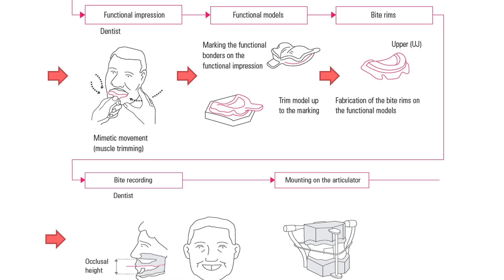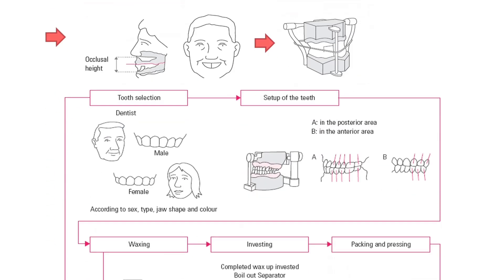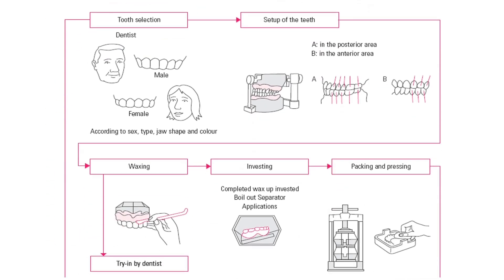This is how jaw relation is performed, and this jaw relation needs to be mounted in the articulator. Once articulation is done, it will simulate maxillomandibular activity and jaw movements.